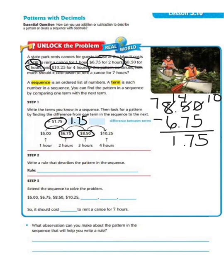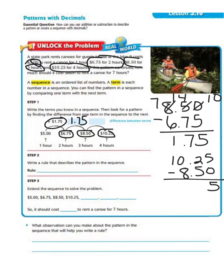Just to make sure, we look at the difference between $10.25 and $8.50. Five minus zero is five. We cannot do two minus five, so we have to borrow all the way across. Twelve minus five is seven, and nine minus eight is one. Again, we see our difference is $1.75.